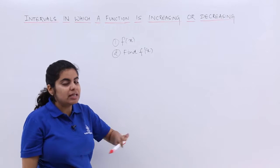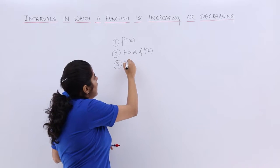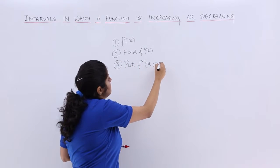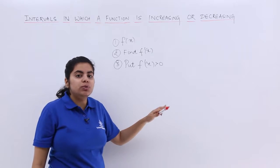Firstly you will be given a function f(x), you have to find its first derivative. Then what do you do? Then actually you have to put that f'(x) greater than 0. If you put that f'(x) greater than 0, two things would be there.